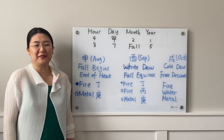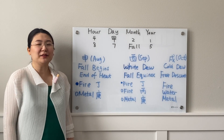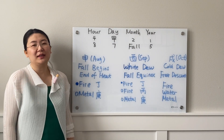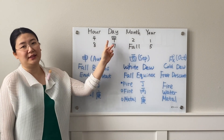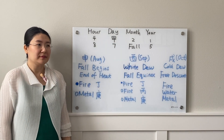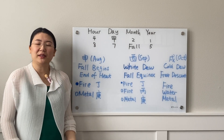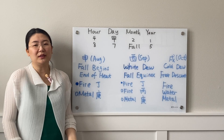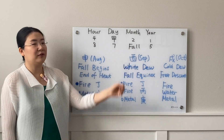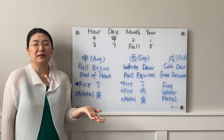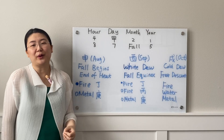Hi everyone, welcome to Life Tips by Ning. In today's video I'm going to share how to find your favorable element if your daily master is a Yang Wood, called Jia, born in the fall season. As mentioned in prior videos, there are similarities and differences for Yang Wood born in different seasons, because the dominant element for fall is metal.